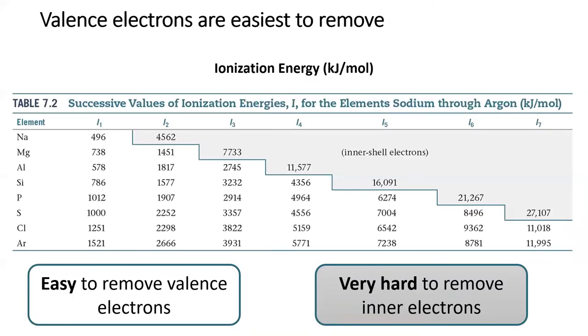If we tabulate this trend for a row of the table, such as for period 3, we see a pattern emerge. Valence electrons have relatively low ionization energies, but there's a gigantic jump in ionization energy once the valence electrons are gone. Each of these elements has one additional valence electron compared to the last, meaning the jump happens at one further ionization.